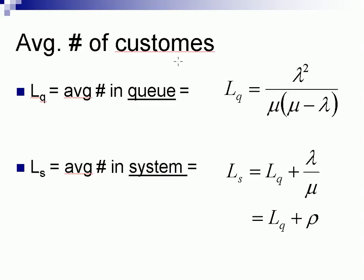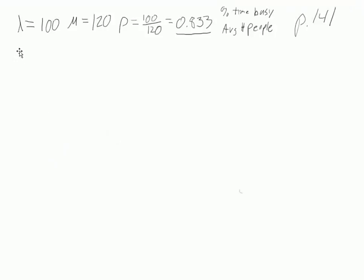Okay, so if you look at the PowerPoint slide here, one thing we want to know is the number of people in the queue. So Lq is equal to the arrival rate lambda squared divided by mu times mu minus lambda. So in the case of this example here, we have 100 squared divided by 120 times 120 minus 100.